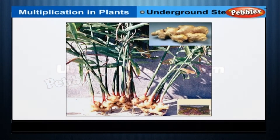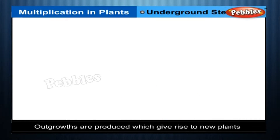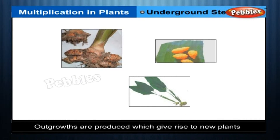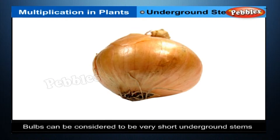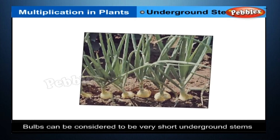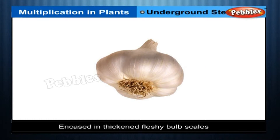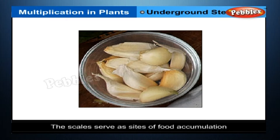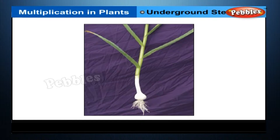Underground stems: rhizomes are underground stems that have buds from which outgrowths are produced, giving rise to new plants. This is seen in ginger, turmeric and banana. Bulbs can be considered to be very short underground stems encased in thickened fleshy bulb scales, which are modified leaves. The scales serve as sites of food accumulation. In the spring, when the stem shoots up from the centre of the scale cluster to form a new plant, it will draw its food from the scales.